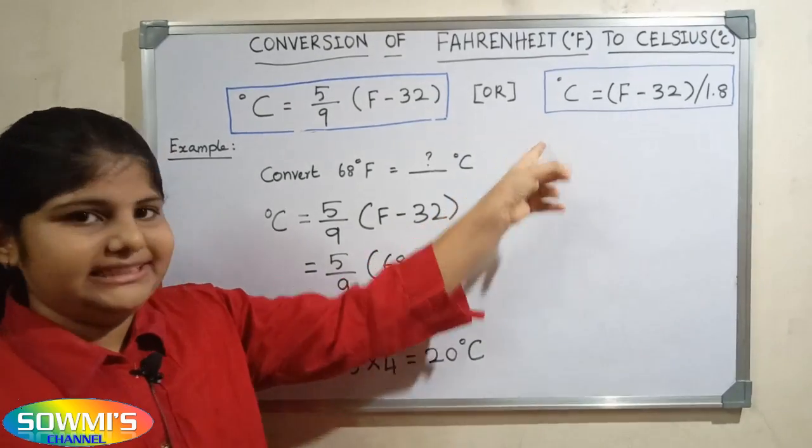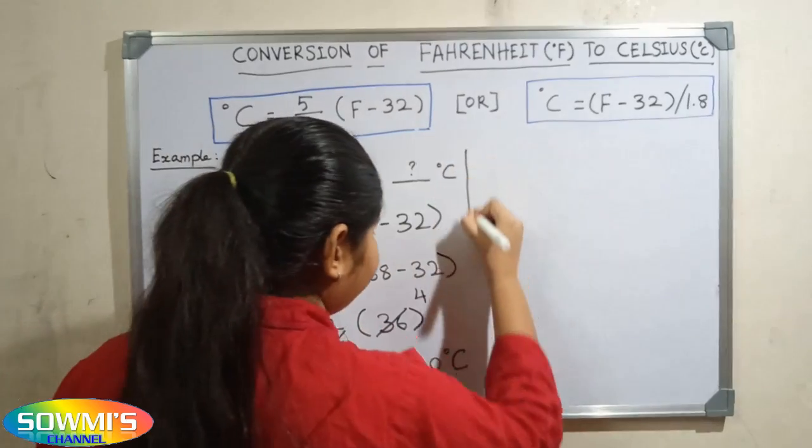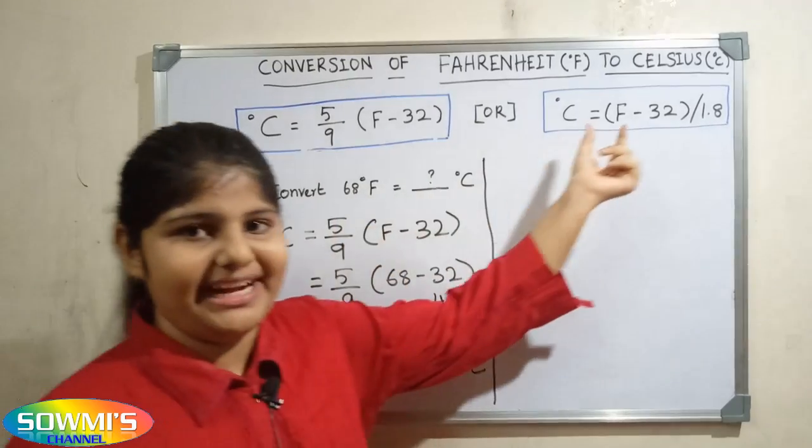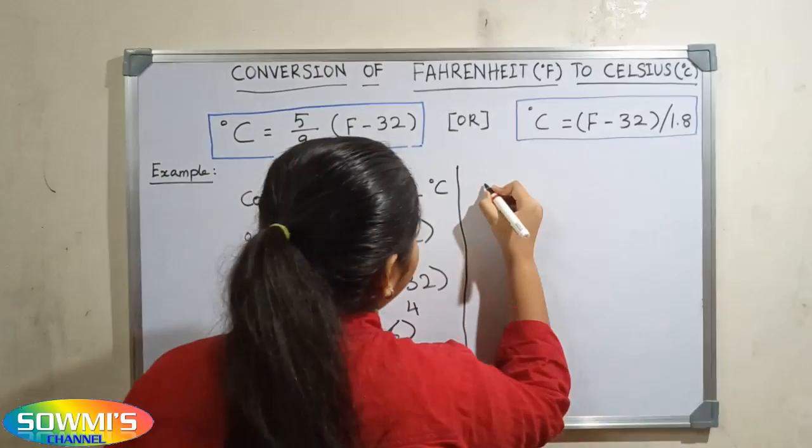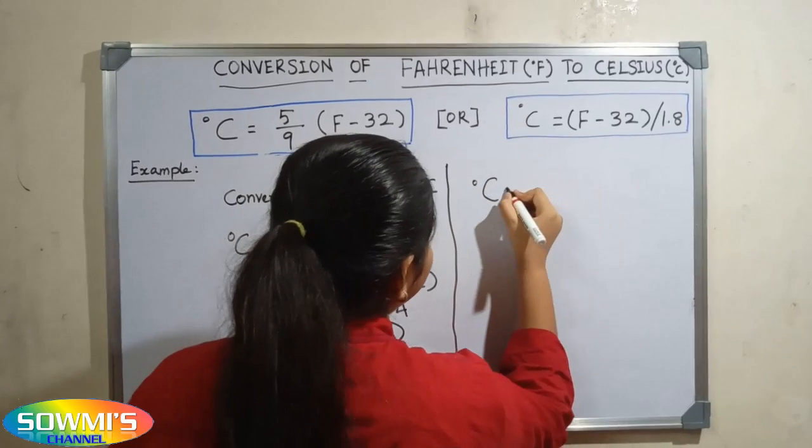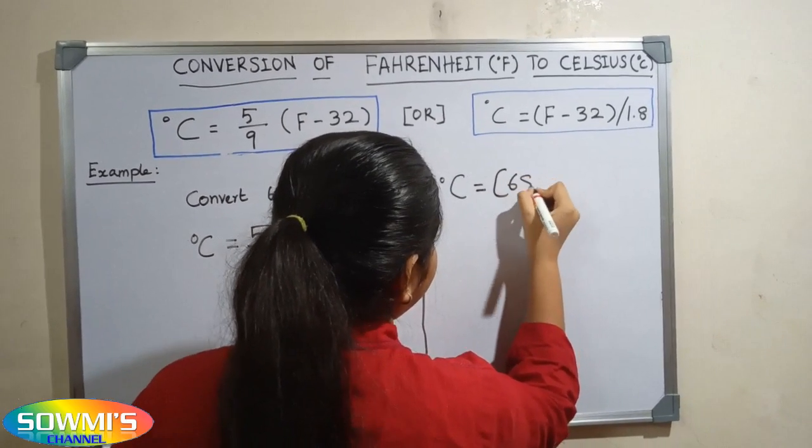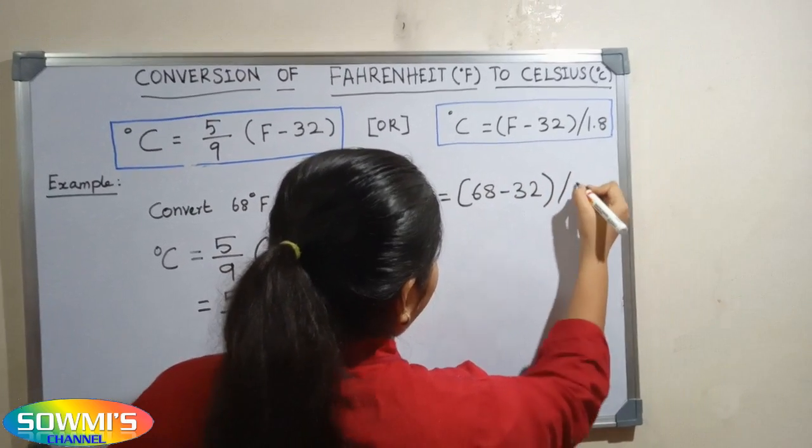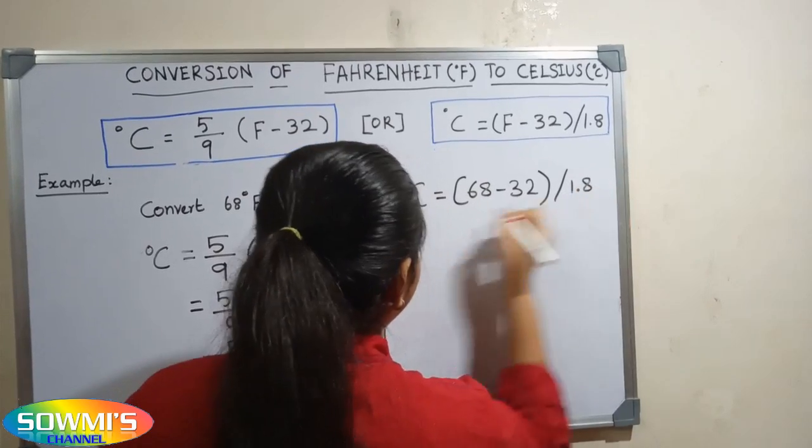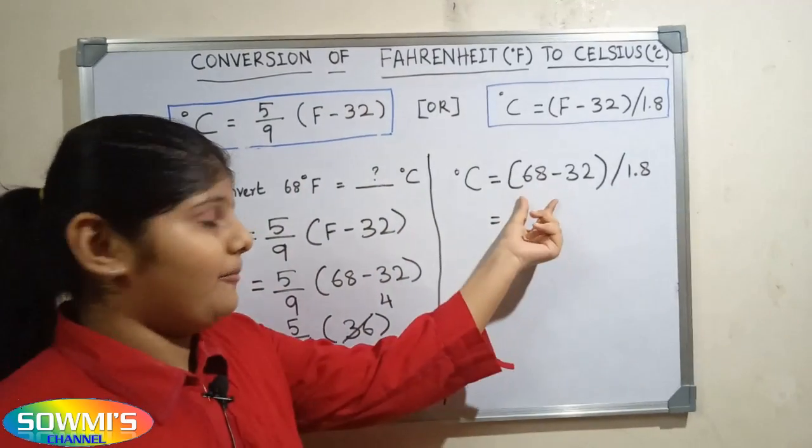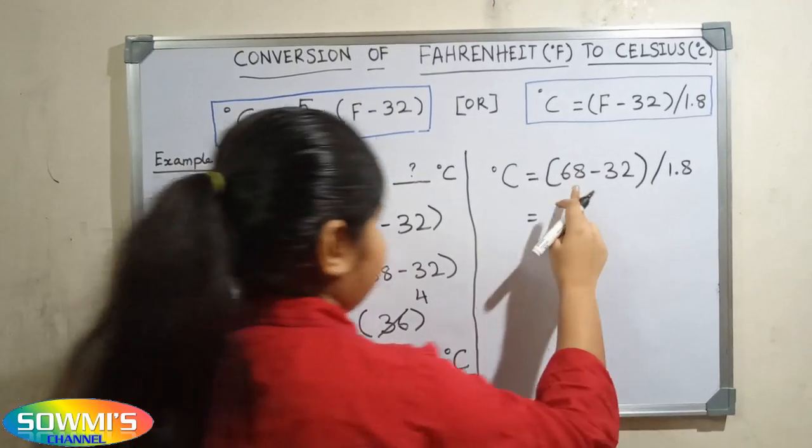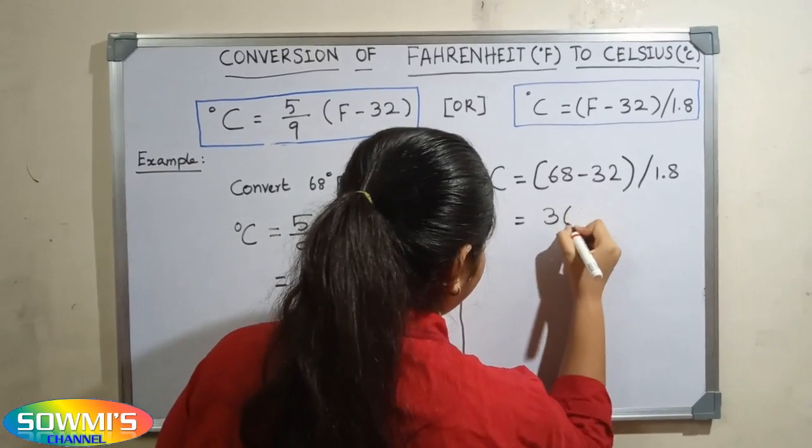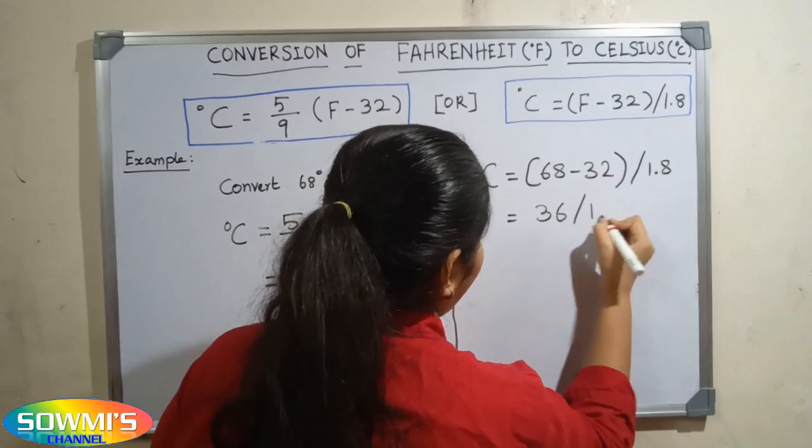Next we will apply this formula. First we have to substitute 68 in the place of Fahrenheit. So degree Celsius equals 68 minus 32 divided by 1.8. First we will solve the operation in the bracket. 68 minus 32 equals 36. So 36 divided by 1.8.